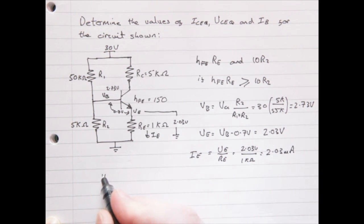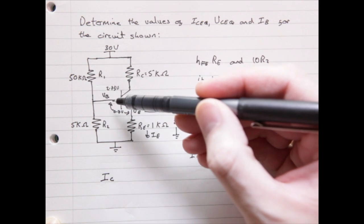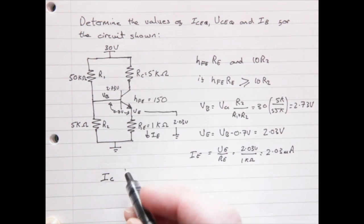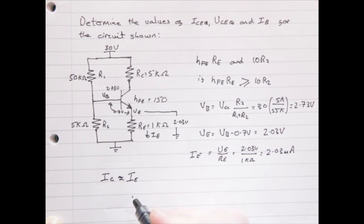And the total current, IE, is made up from the combination of the current IC, plus a very small combination from IB. This is Kirchhoff's current law. So, for the purposes of this question, we can assume that IC is approximately equal to IE.